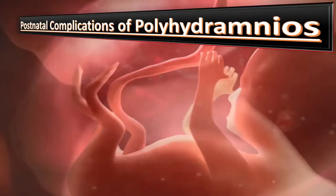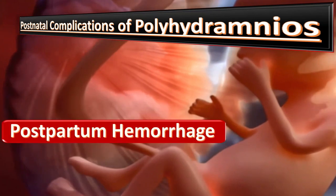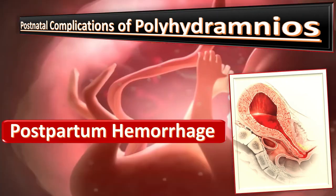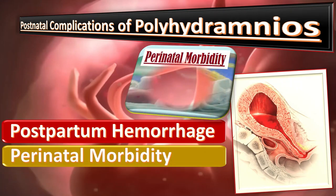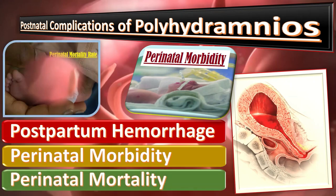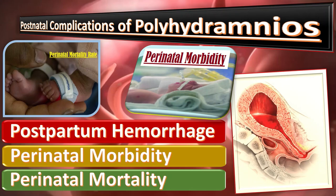What are the postnatal complications of polyhydramnios? Postnatally, the incidence of postpartum hemorrhage is increased secondary to uterine atony in patients with pregnancies complicated by polyhydramnios. Next comes perinatal morbidity. Associations between idiopathic polyhydramnios and perinatal morbidities are generally poor, apart from a strong positive association between polyhydramnios and birth weight of more than the 90th centile. The predictive ability of aberrant amniotic fluid volume to predict outcome is generally poor due to poor sensitivity. Lastly, perinatal mortality rate is significantly higher compared with normal pregnancies.